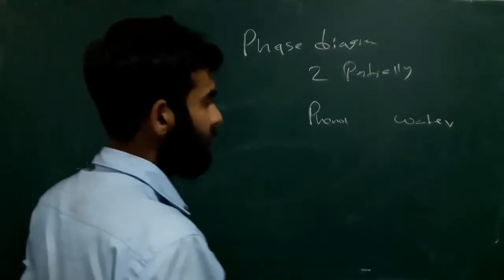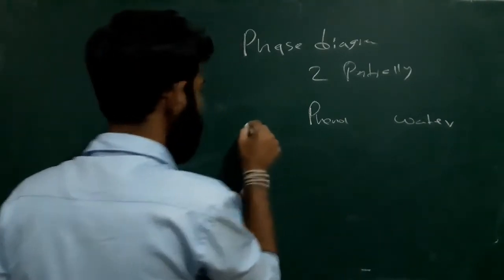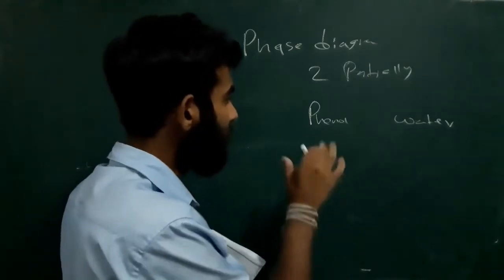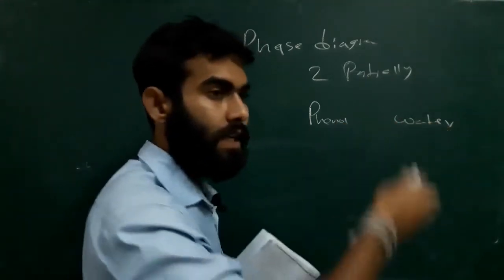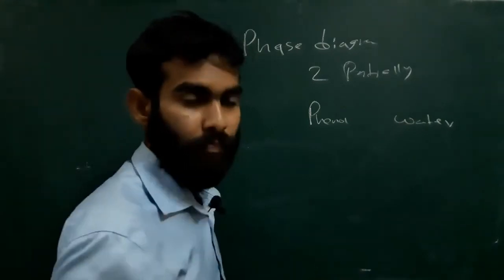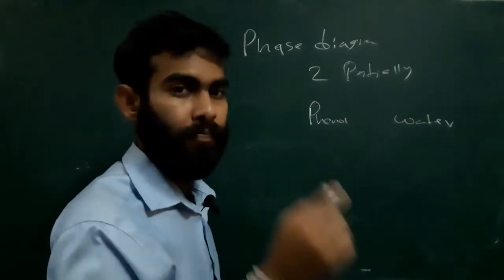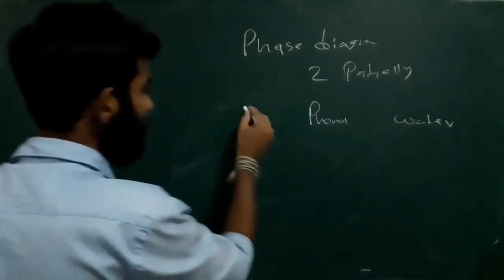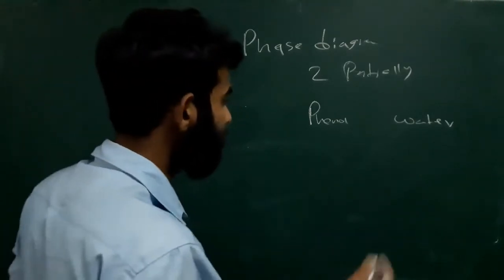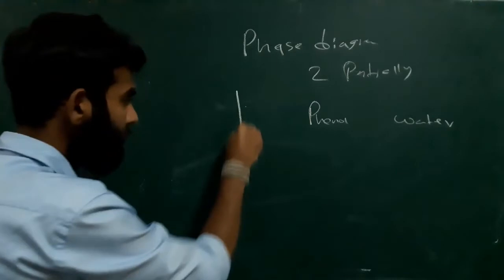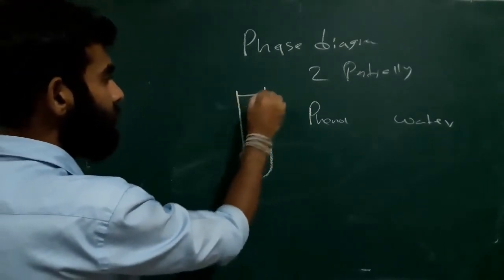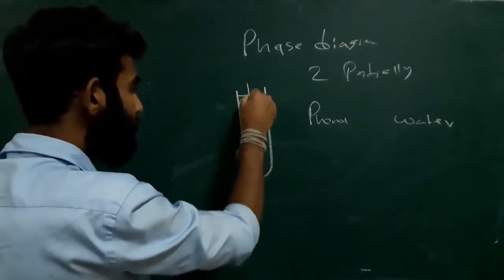In room temperature, they appear as two phases. If we shake both solutions in a boiling tube, we will see turbidity. We are going to get the phase diagram. To do that, we will get a boiling tube and stopper, and we will insert a thermometer.